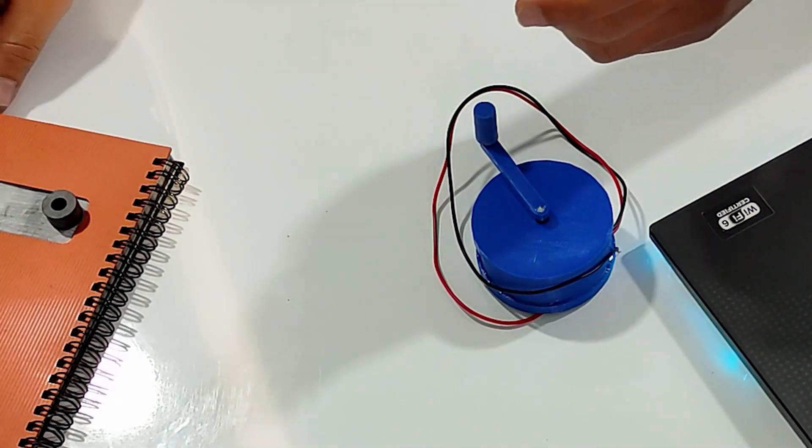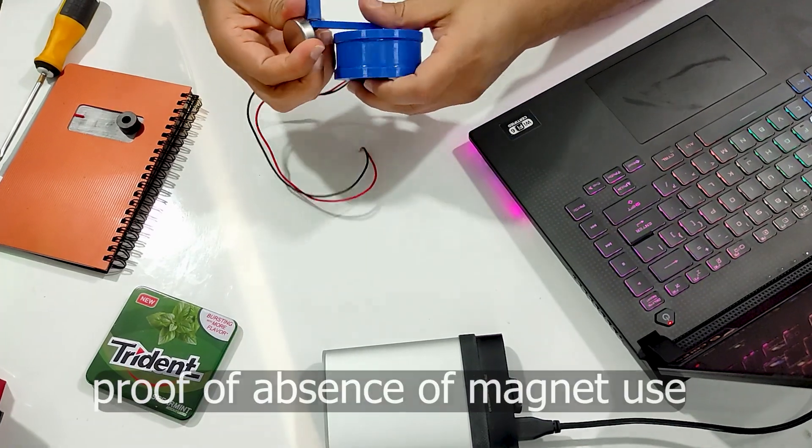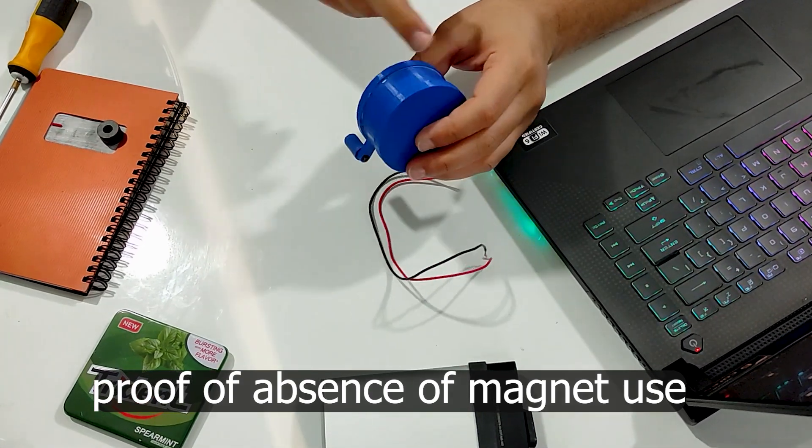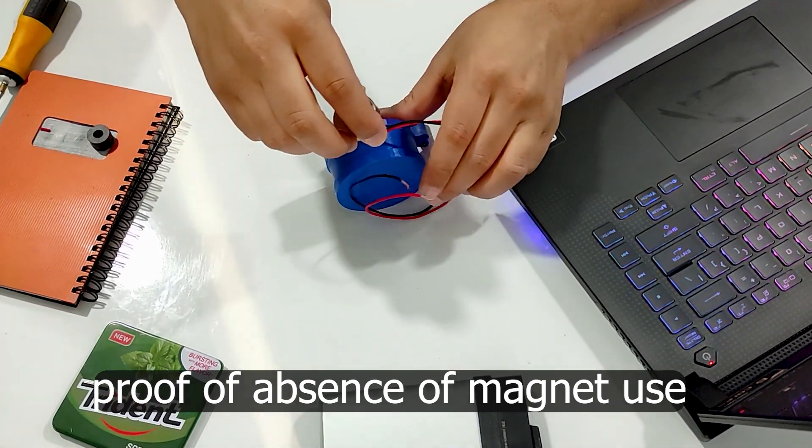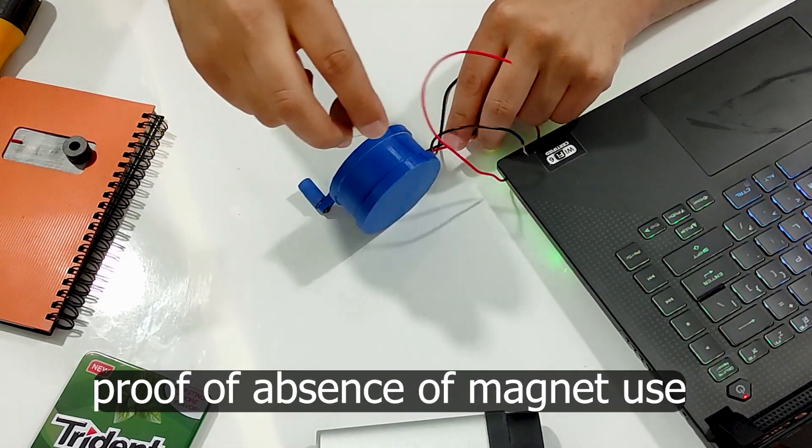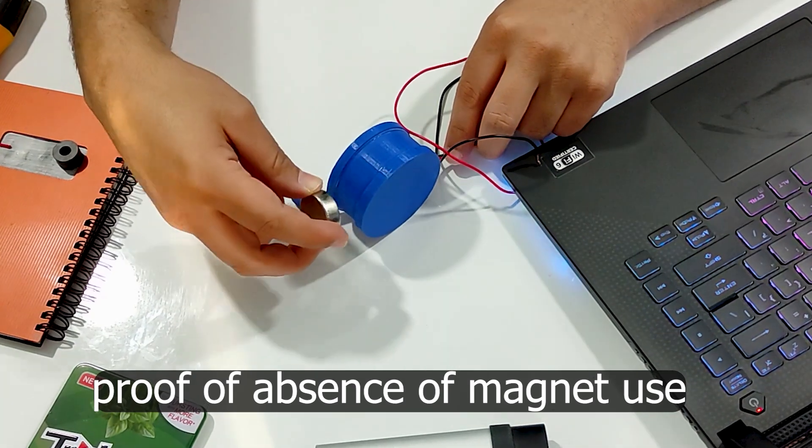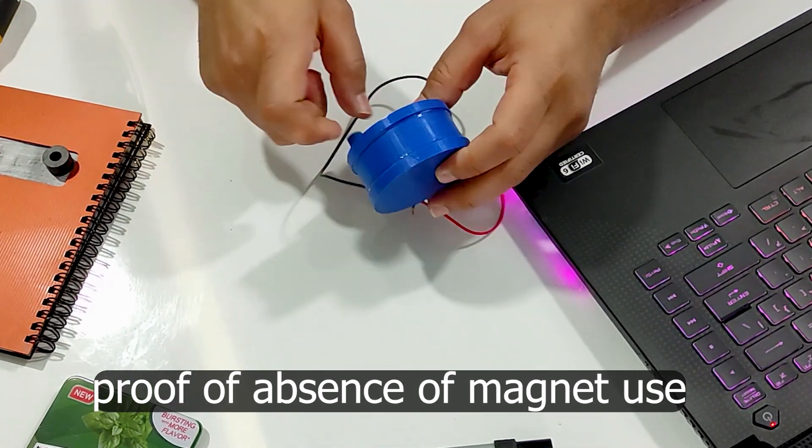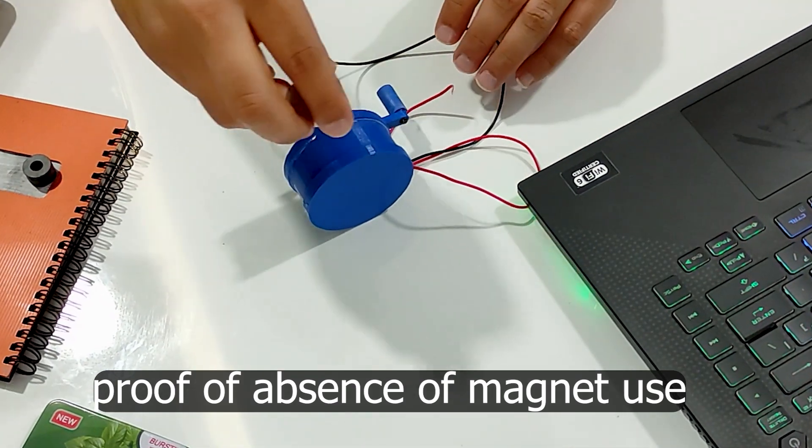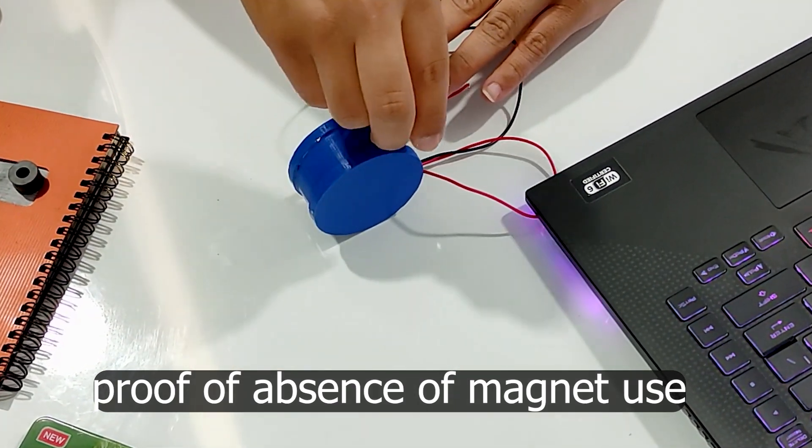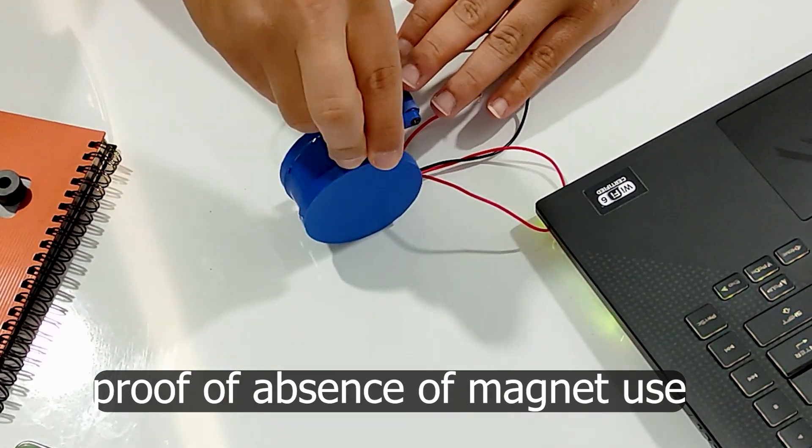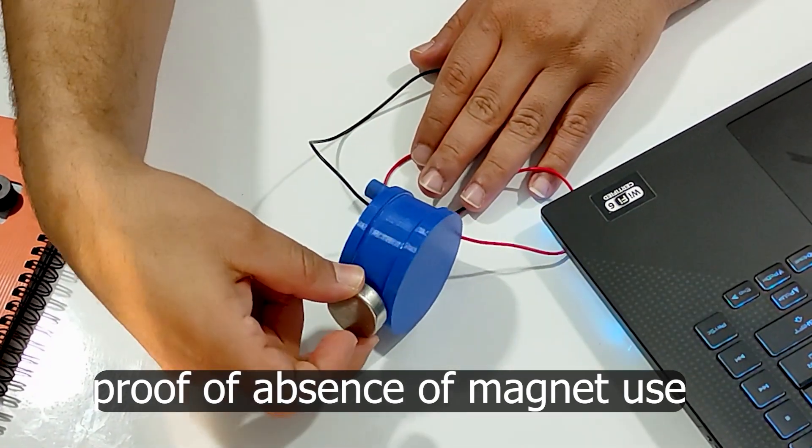In conclusion, the emergence of generators operating without the need for any coils or magnets represents a transformative leap in the realm of energy technology. This revolutionary approach not only challenges traditional methods, but also presents a host of exceptional benefits. By eliminating the requirement for winding, copper coils, aluminum coils, or any coils at all, alongside the exclusion of magnets, these generators simplify the production process, reduce manufacturing costs, and enhance overall efficiency.